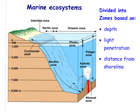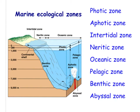Let's look at marine ecosystems. Marine ecosystems are divided into zones based on depth of the water, penetration of light, and the distance of that water from the shoreline. The first zone is the photic zone — this is the shallow surface water where light easily penetrates and photosynthesis can occur. It's really important to note that almost all of the energy that sustains marine communities comes from the photosynthesis of phytoplankton in this photic zone.